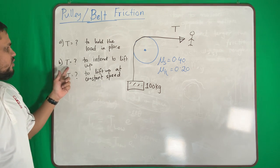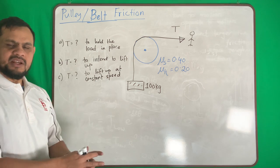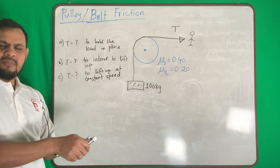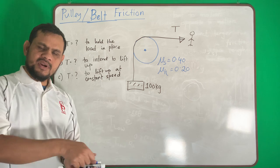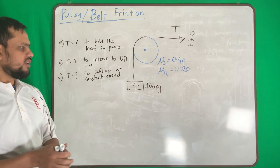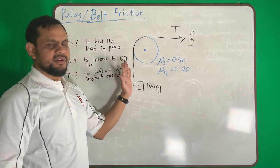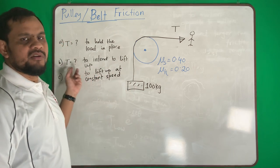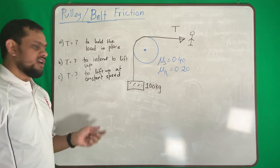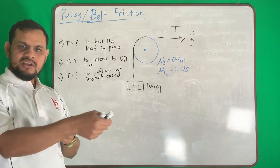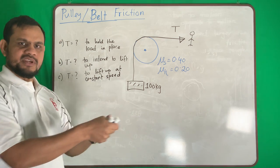Second question: to intend to lift up. I want to lift up, I'm not totally lifting up, but my intention is to lift it up so that the motion is this way. In that case, what is the value of T? Third is I will lift up at a constant speed.